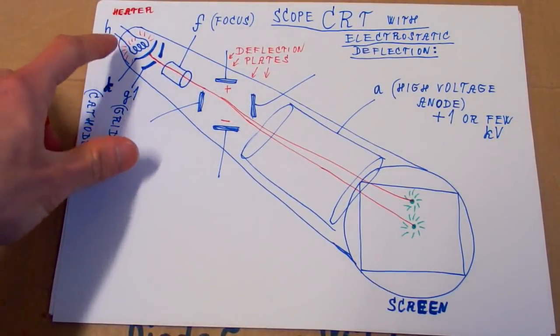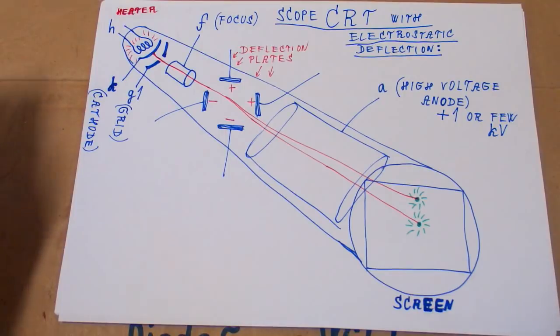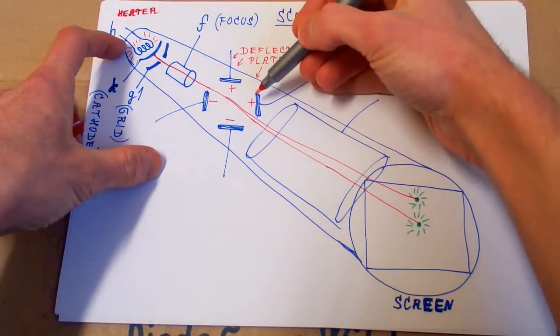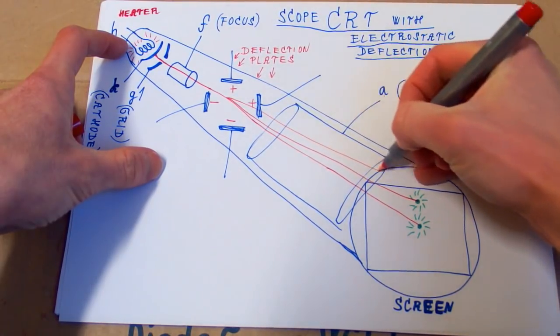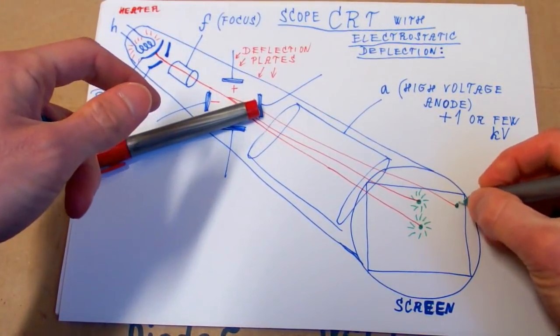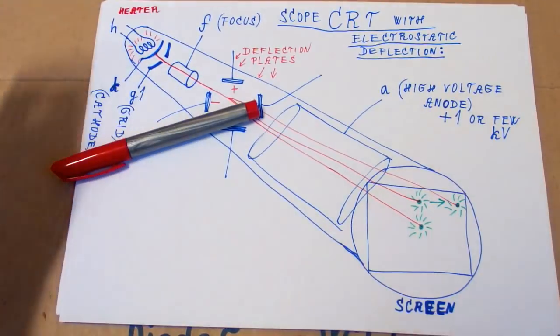You can also deflect it horizontally. So let's connect positive here, negative here. The electrons are negative, so they are attracted to the positive. So it will be deflected to the right now. And the shining point will be here. Deflected to the right side. So the beam can be deflected horizontally and vertically.